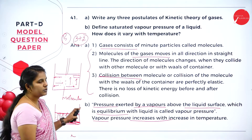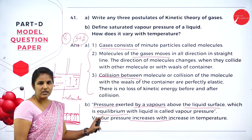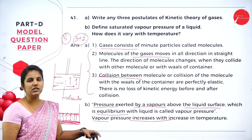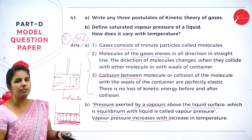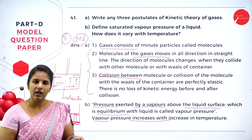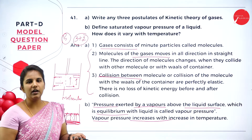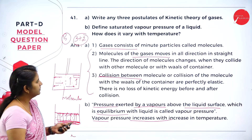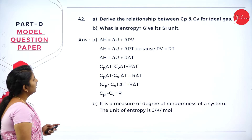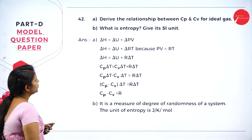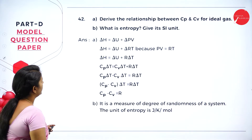You must write a proper statement about vapor pressure and how it varies with temperature. For writing the definition of vapor pressure, you will get 1 mark, and for how it varies with temperature, you will get 1 mark — totalling 2 marks.